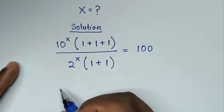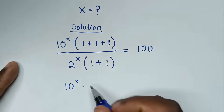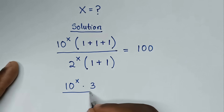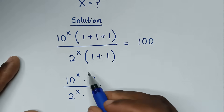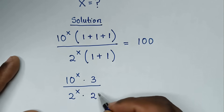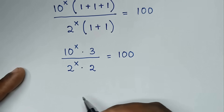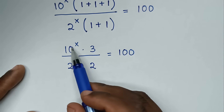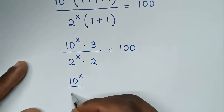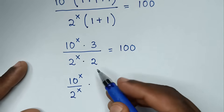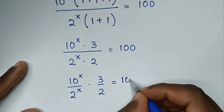Then it will be 10 power x times 1 plus 1 plus 1, which is 3, over 2 power x times 1 plus 1, which is 2, is equal to 100. So in the next step, it will be 10 power x over 2 power x, times 3 over 2, is equal to 100.